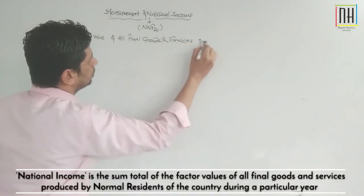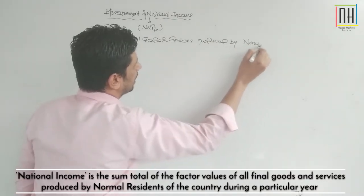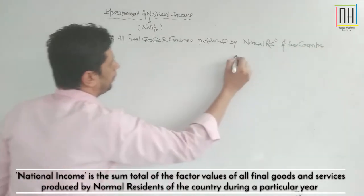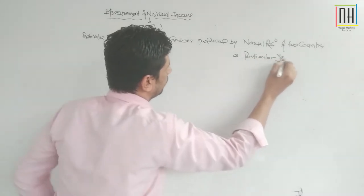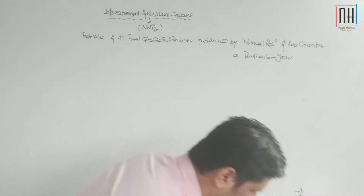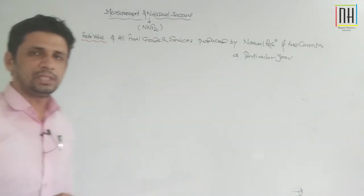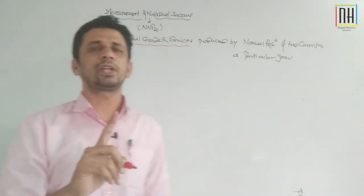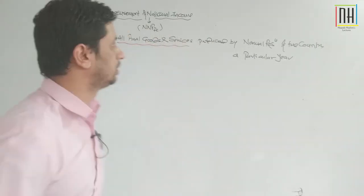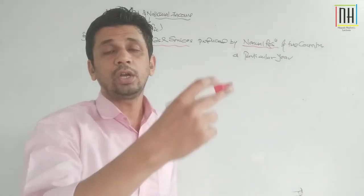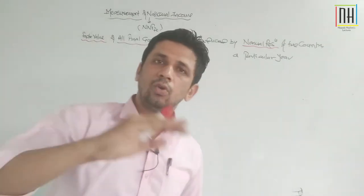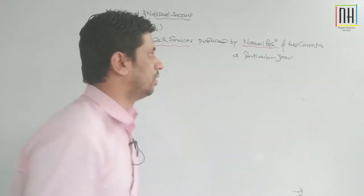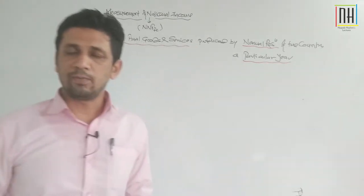National income is the factor value of all final goods and services produced by normal residents of the country during a particular period of time. Factor value means we are excluding net indirect taxes. Final goods and services means we are not considering intermediate goods. Normal residents means we are including NFIA — normal residents whether living in our economic territory or in the rest of the world.